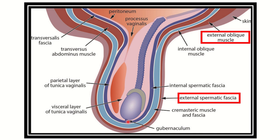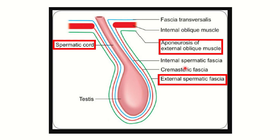One important structure we can see is the gubernaculum, which is responsible for the descent of the testes. In the second picture, we can see the layers of the scrotum. First of all, skin, then external spermatic fascia, and this external spermatic fascia arises from the aponeurosis of the external oblique muscle.